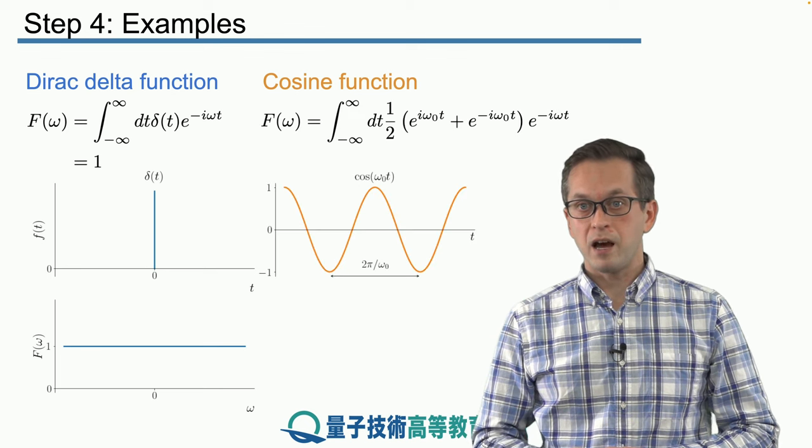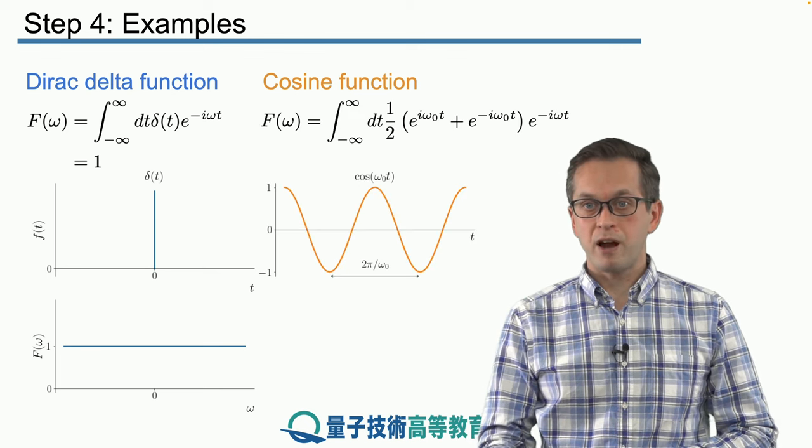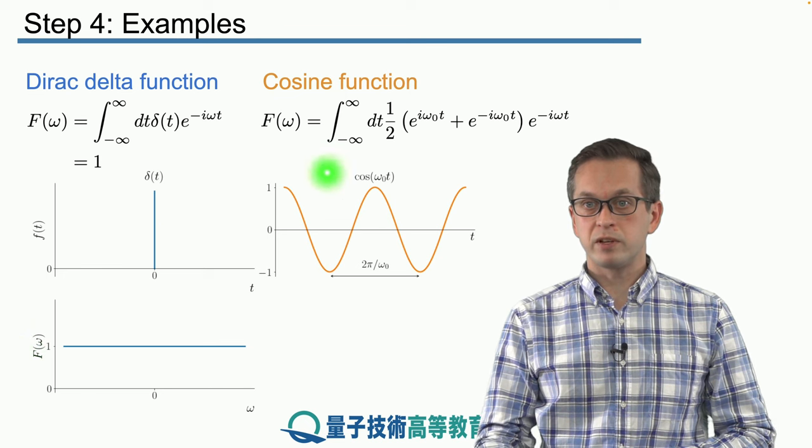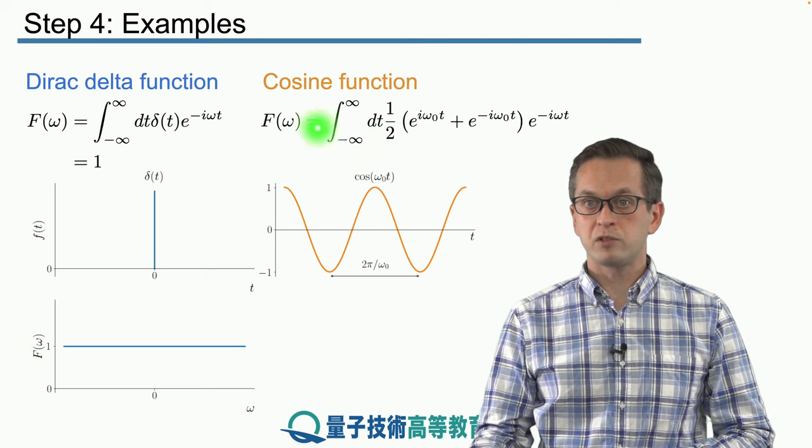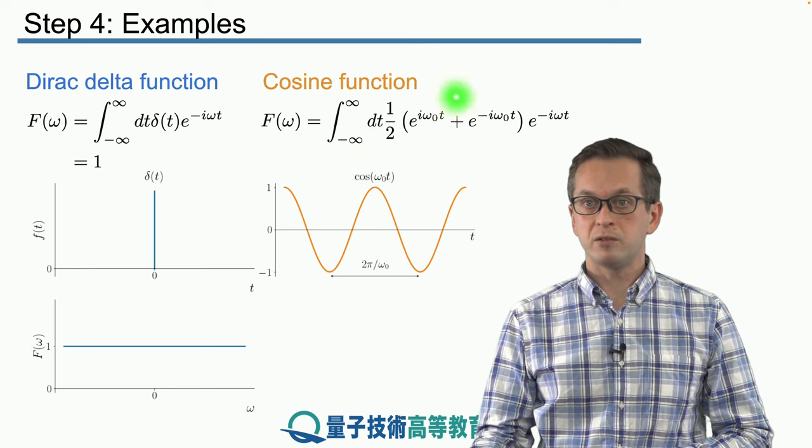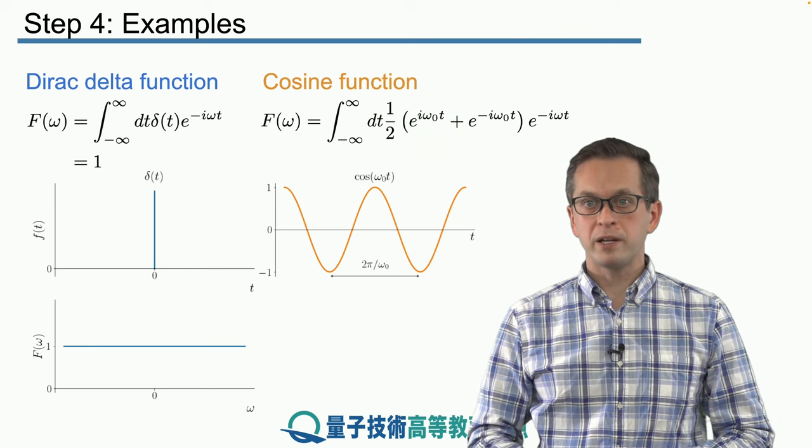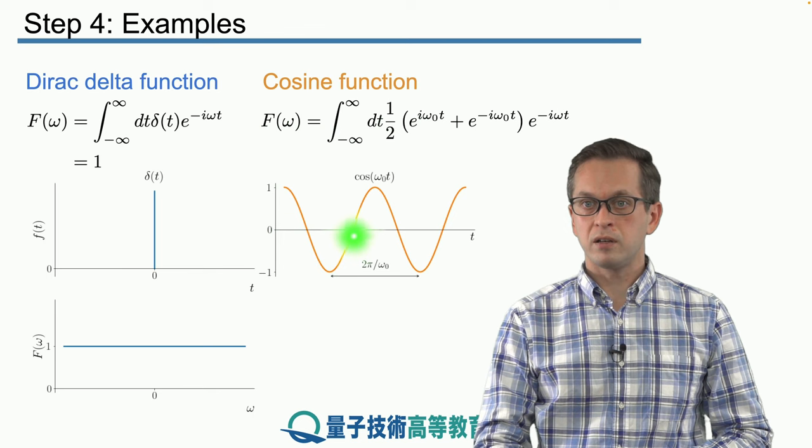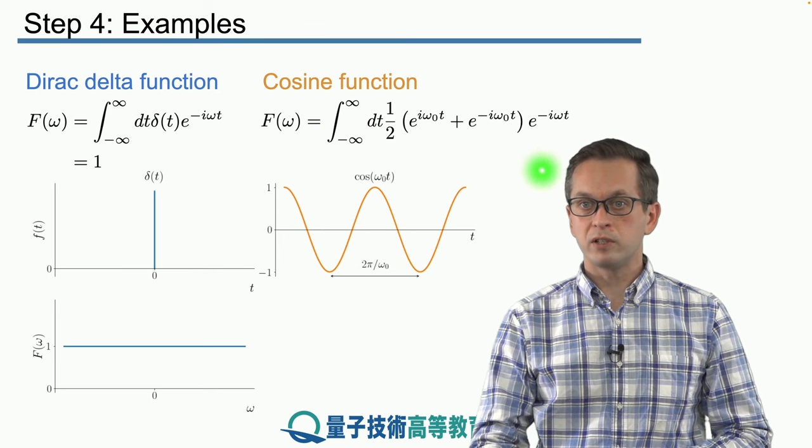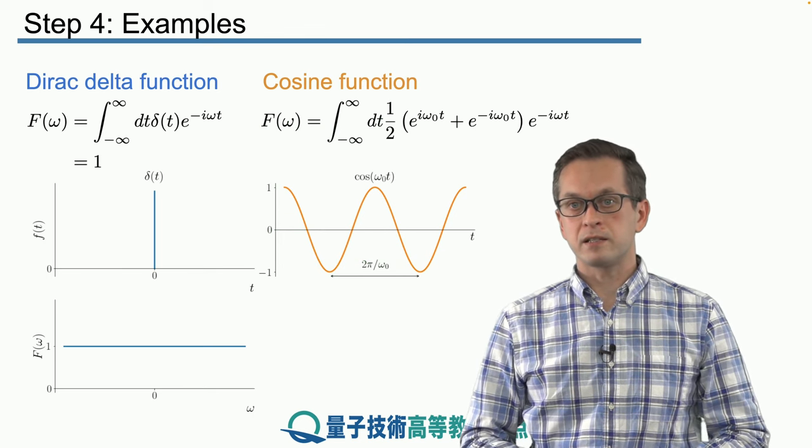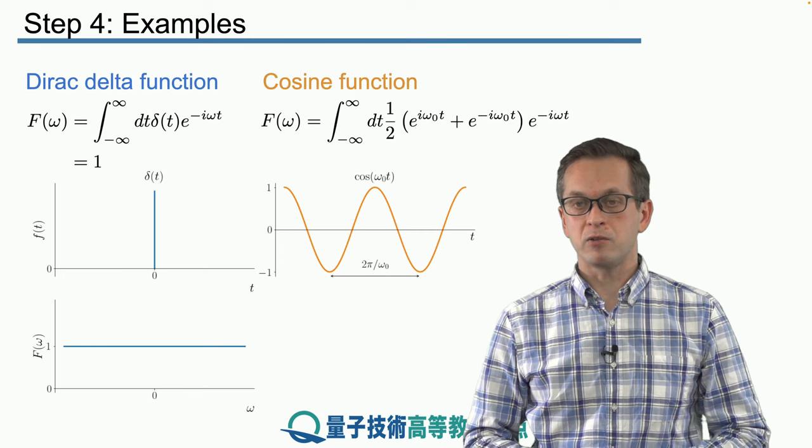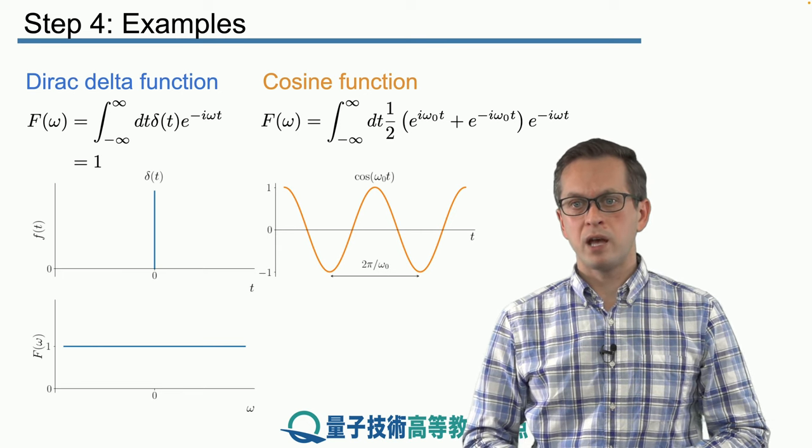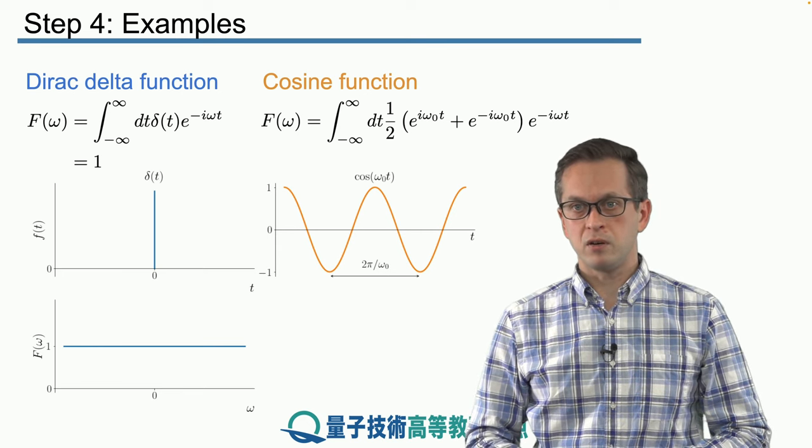Next, cosine function. So here I have written the cosine function in terms of exponentials just to make this integral a little bit easier to do. But again, it's the same thing. We saw that the cosine of omega naught t is a function like that given by this orange curve.